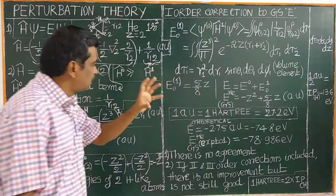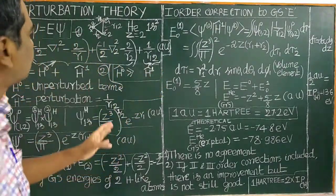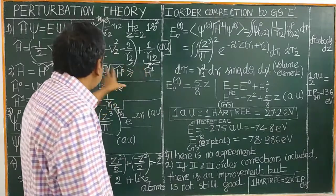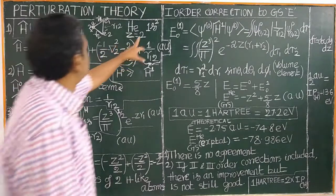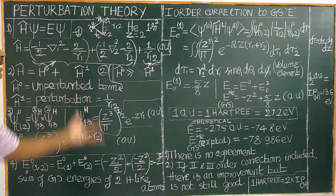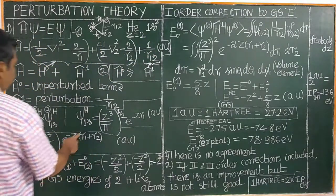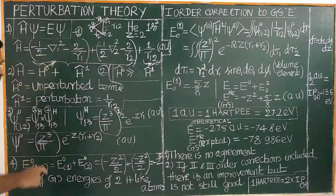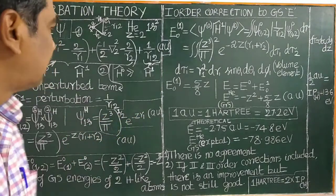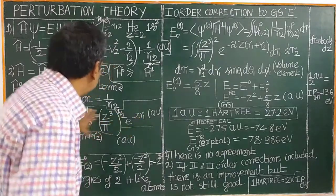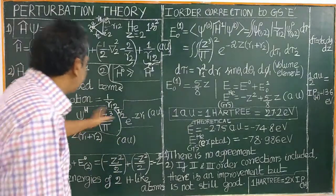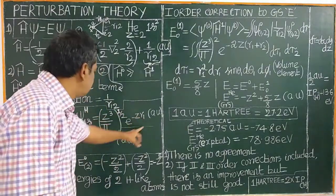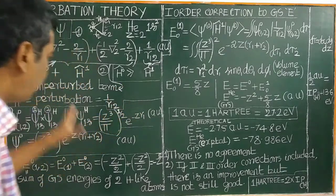The perturbation term is smaller than the unperturbed term. Let us see the wave function for helium atom. From the hydrogen-like atom, the wave function of the 1s orbital for a hydrogen-like atom — we have already studied by solving the Schrödinger wave equation of hydrogen atom — this wave function is obtained for the 1s orbital.